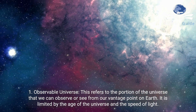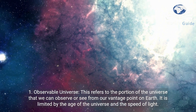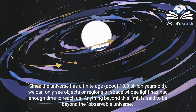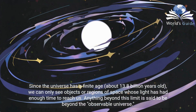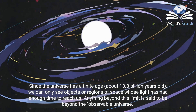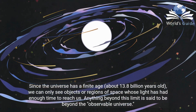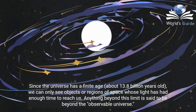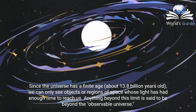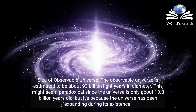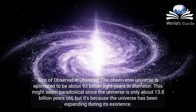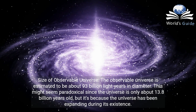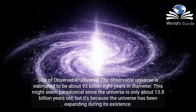One: observable universe. This refers to the portion of the universe that we can observe or see from our vantage point on Earth. It is limited by the age of the universe and the speed of light. Since the universe has a finite age — about 13.8 billion years old — we can only see objects or regions of space whose light has had enough time to reach us. Anything beyond this limit is said to be beyond the observable universe. The observable universe is estimated to be about 93 billion light-years in diameter.